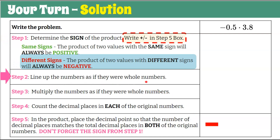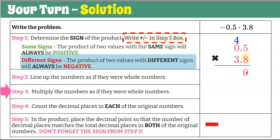Step two: line up the numbers as if they were whole numbers. Put 3.8 underneath 0.5 — even though this has a zero, they line up. Step three: multiply as if whole numbers. 8 times 5 is 40 — 0 and carry the 4. 8 times 0 is 0, plus 4 is 4, giving us 40. Now the second row with a zero placeholder. 3 times 5 is 15 — 5, carry the 1. 3 times 0 is 0 plus 1 is 1. Add the two quantities: 0 plus 0 is 0; 4 plus 5 is 9; and then we have 1.